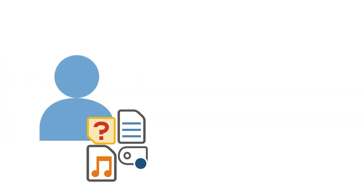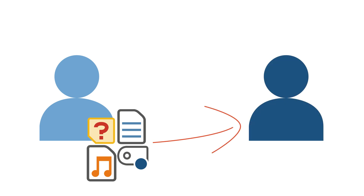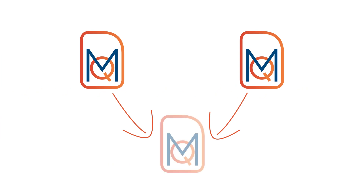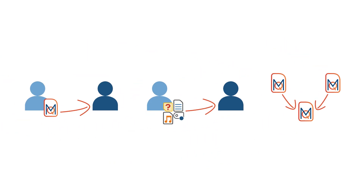We also have the option to send individual components of our projects to our team members — for example, a single document with associated memos, variables, or coding. Alternatively, we can send only our code system as a single element. Also, with a few clicks, we can merge two different project files into one common project file. We will now take a closer look at these three options.